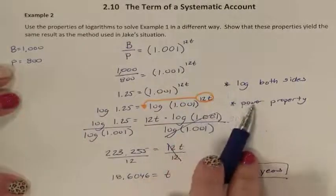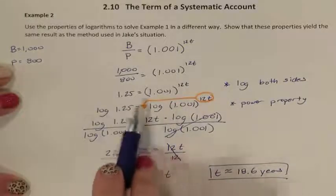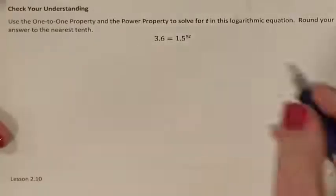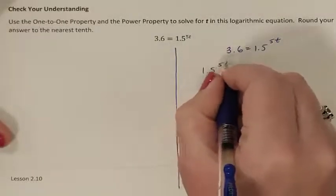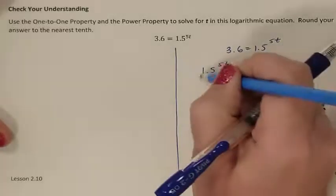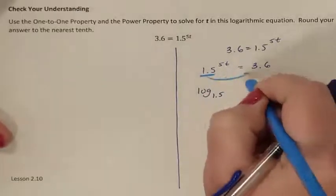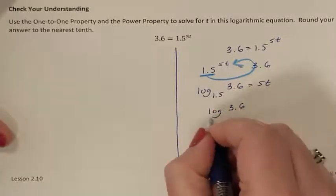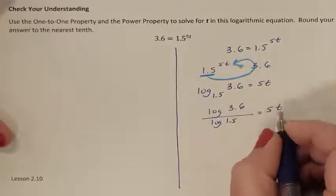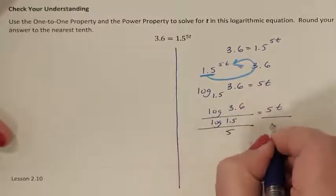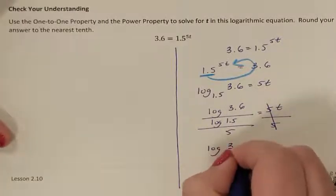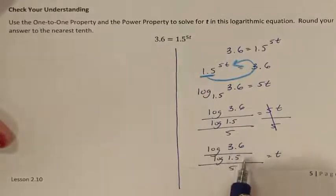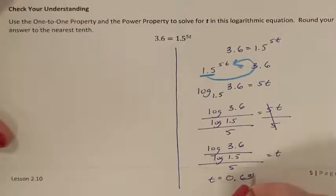We solved the same problem but a different way — using the one-to-one property to make both sides a log, then the power property to bring the exponent down. In the previous method we were used to seeing the exponent part written first and starting with our base, writing it as log base 1.5, then using the change of base: log of 3.6 divided by log of 1.5 equaling 5t. Dividing both sides by 5 gives log of 3.6 over log of 1.5, all over 5, equaling t — which solves to about 0.631834.